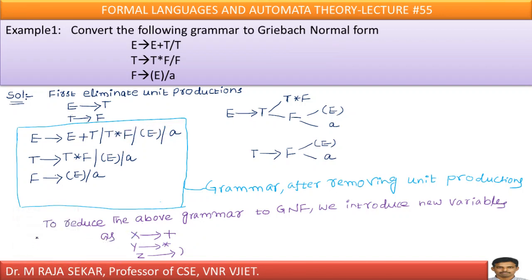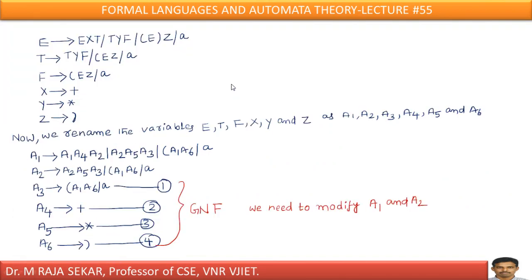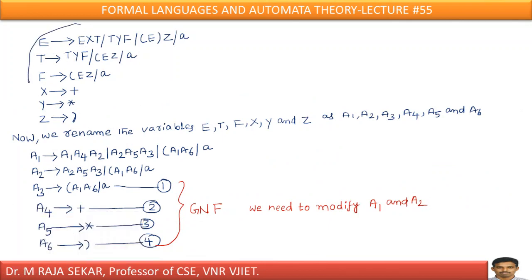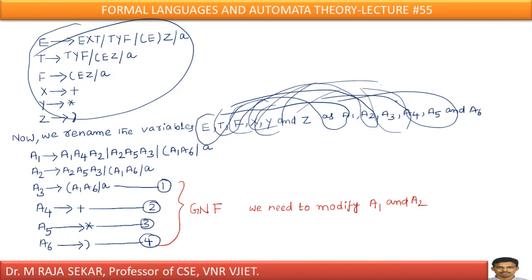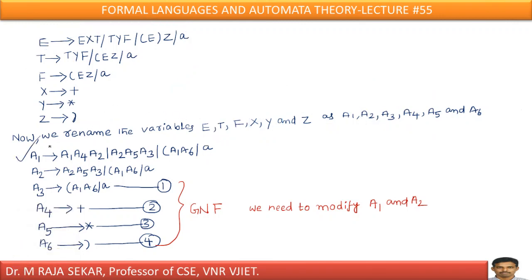After renaming, your grammar will change like this. This is your modified grammar. Now let me rename: capital E as A1, capital T as A2, capital F as A3, capital X as A4, capital Y as A5, capital Z as A6. Just you can understand — it is simple. Just go through this. I am renaming all the variables and writing the other newly introduced productions.